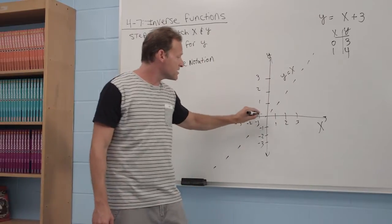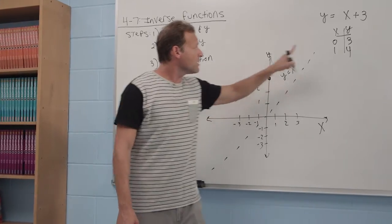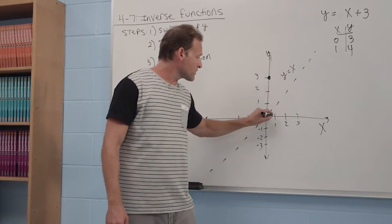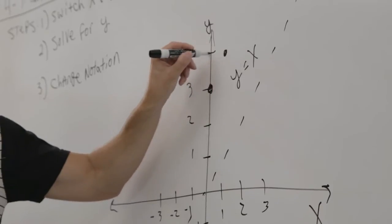Let's plot this. 0, 3. 1, 4 means go to the right one, and then go up 4 units.